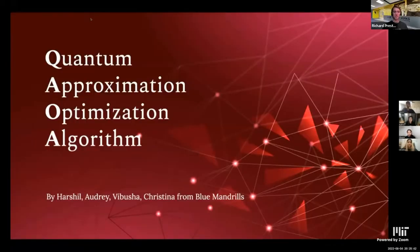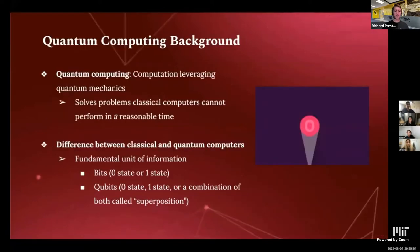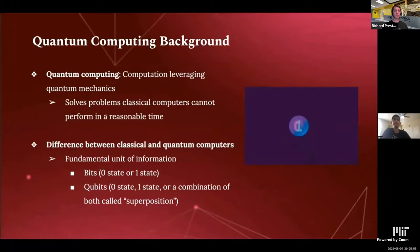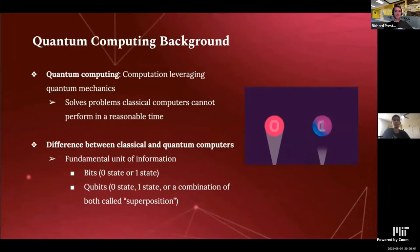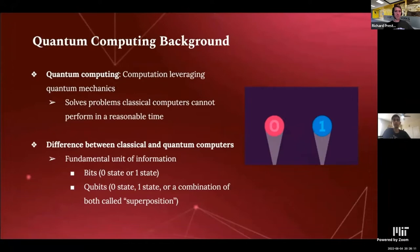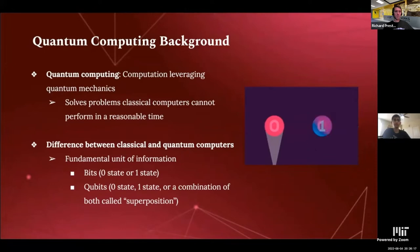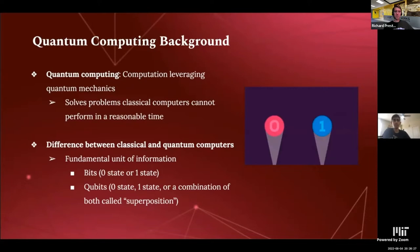My name is Herschel. I'm Audrey. I'm Abusha. I'm Christina. And this past summer, we worked on the quantum approximation optimization algorithm. Quantum computing is a type of computing that leverages quantum properties of small particles to solve certain problems that classical computers just cannot solve in reasonable time. The difference boils down to the fundamental unit of information: classical computers use a bit, which can be zero or one, while quantum computers utilize a qubit, which can be zero, one, or some combination of the two — called superposition. A good analogy is to think of bits as a switch with only on and off states, while qubits are more like a dial that can be some intermediate value between on and off.